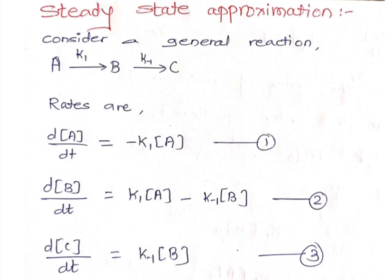When a species undergoes decomposition, the sign will be negative. Now writing the rate of change of concentration of the intermediate B with respect to time: dB/dt equals K1 times concentration of A, because B is formed from reactant A and formation rate is positive. Then in the second step, B decomposes to give product C with rate K-1, so we subtract K-1 times concentration of B.